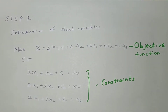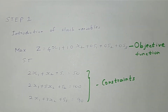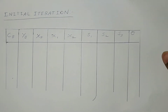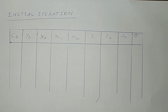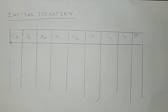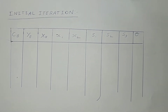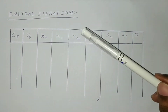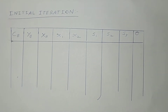Now we will proceed to the initial iteration. In the initial iteration, there will be a table with the following columns: cb, yb, xb, x1, x2, s1, s2, s3, and theta.